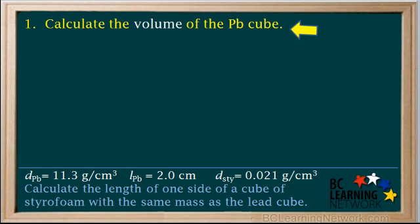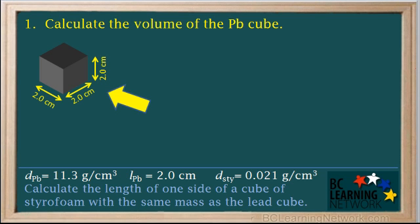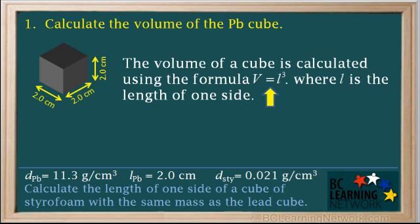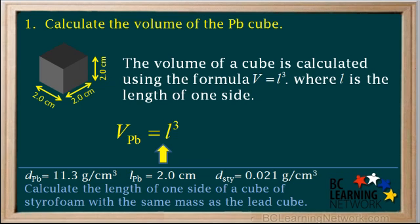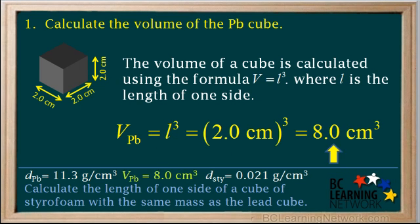We'll start with step one — calculating the volume of the lead cube. It's a cube with each side a length of two centimeters. The formula for the volume of a cube is V equals L cubed, where L is the length of one side. The length L equals two centimeters. Two centimeters cubed is eight centimeters cubed. This volume of the lead cube is now noted in the information below.